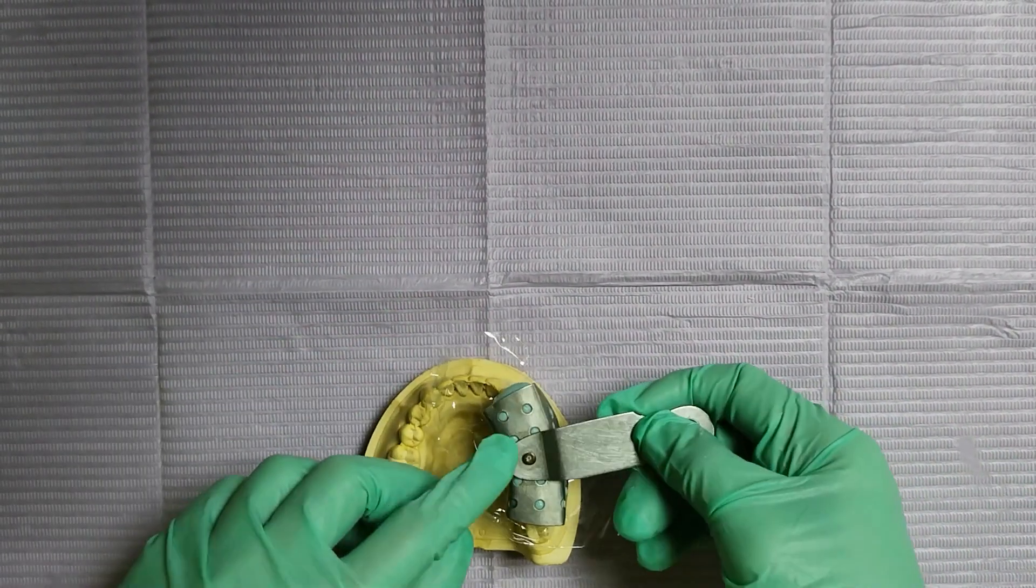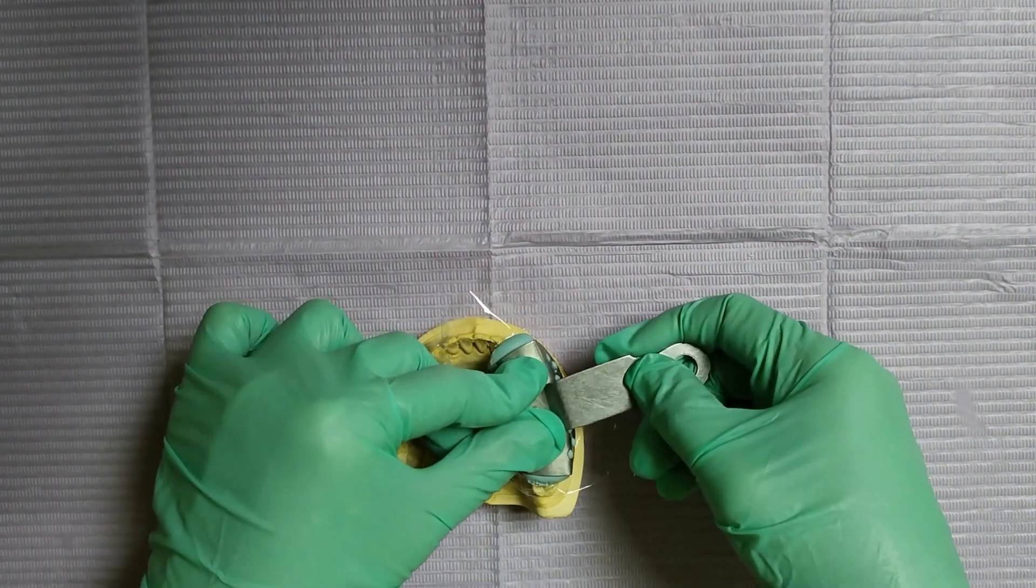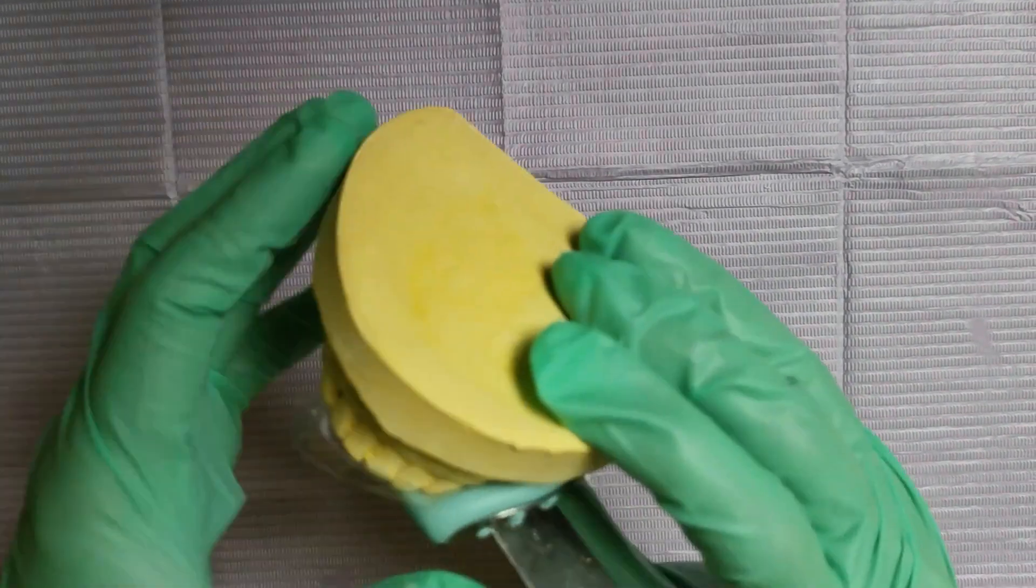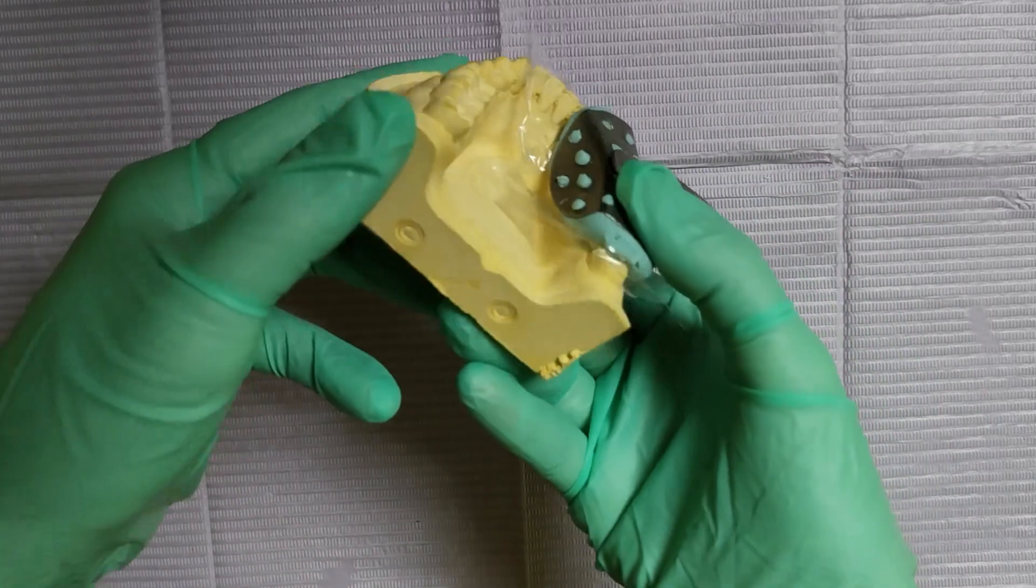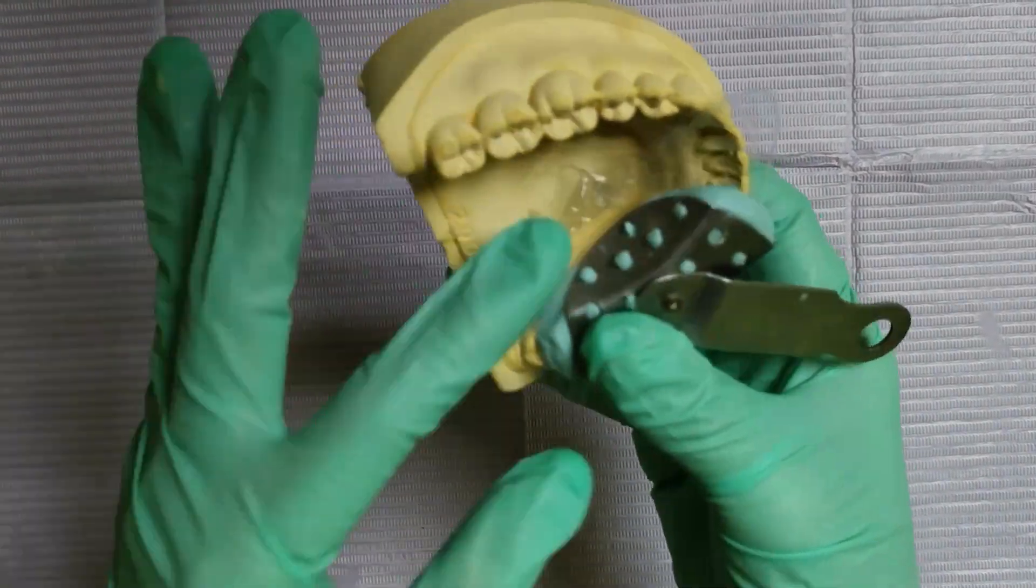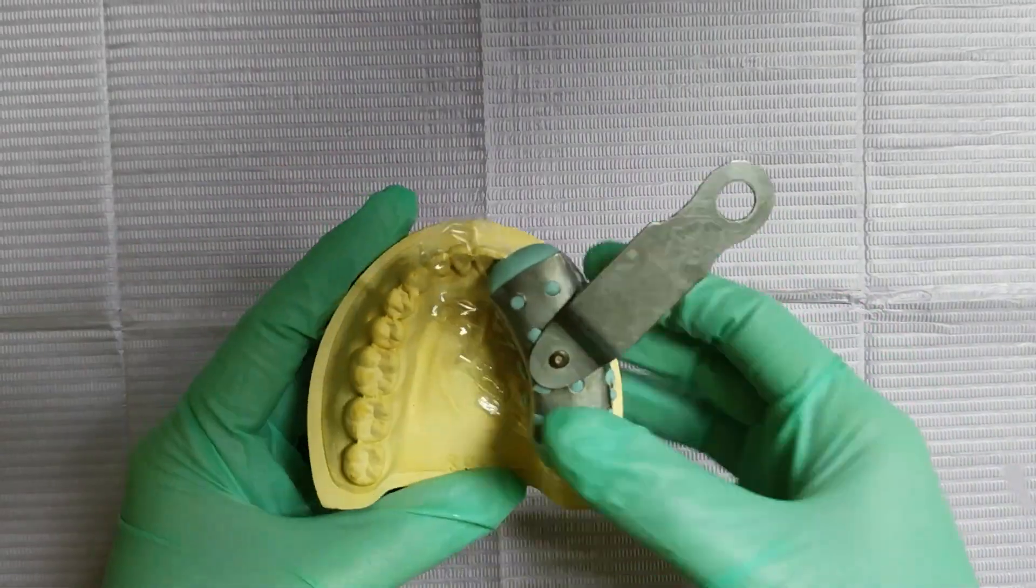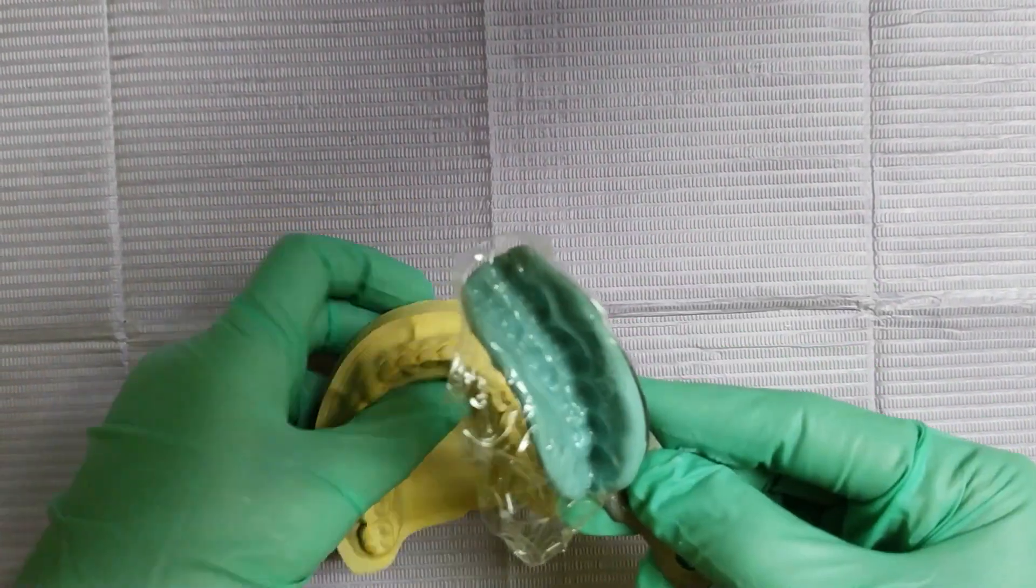Now you can make an impression on your model. Firmly place your tray down on the model and wait for about a minute so that the impression will partially set. After that, remove the impression from your model.